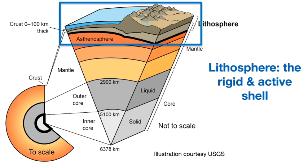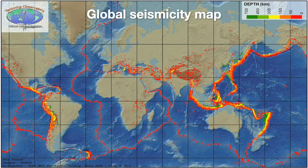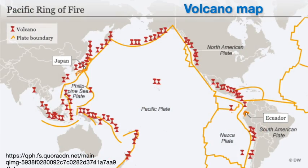The lithosphere is the outermost layer of the earth. It is a rigid and very active shell — there are a lot of earthquakes occurring around the globe, and volcanoes as well.